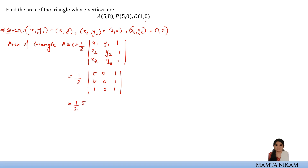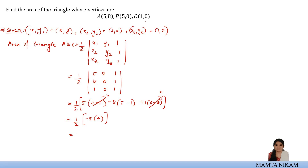Evaluating: half times [5 × (0 − 0) − 8 × (5 − 1) + 1 × (0 − 0)] = half times [0 − 8 × 4 + 0] = half times (−32) = −16. Since area must be positive, we take the absolute value. Therefore, the area of the given triangle is 16 square units.